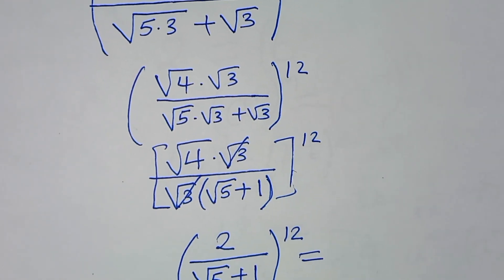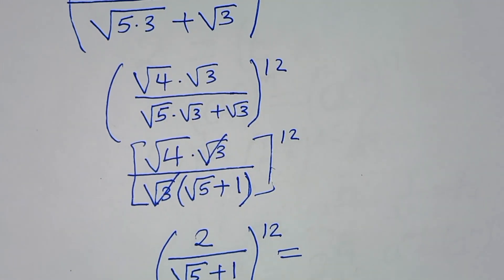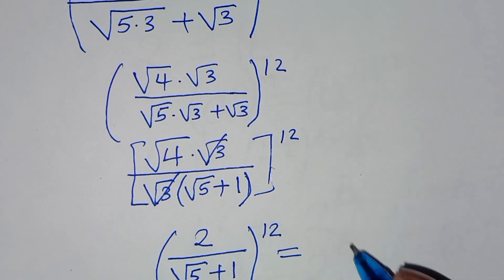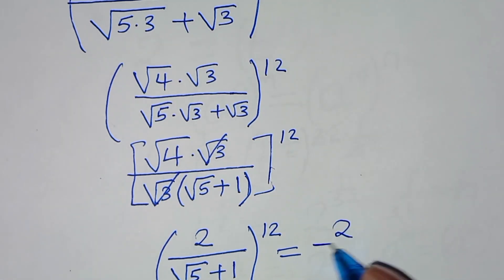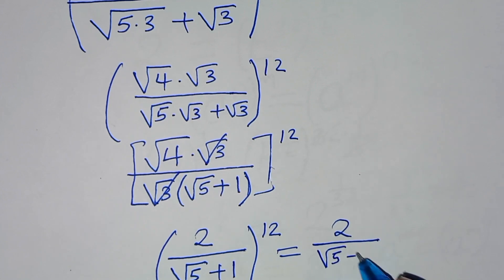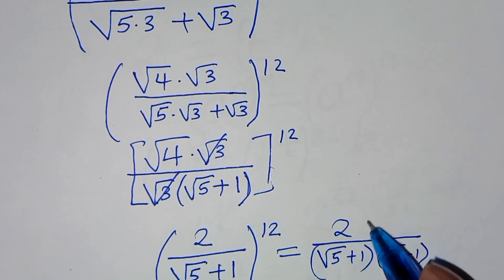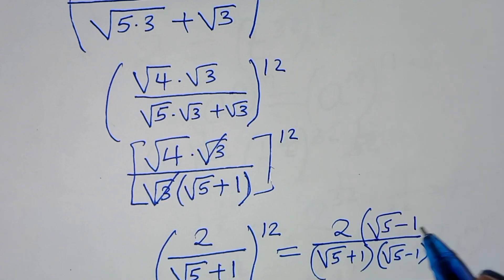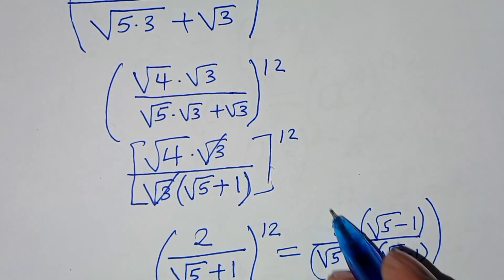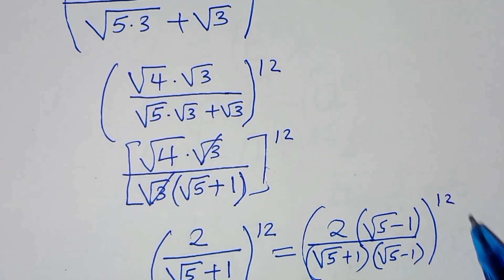The next step is to rationalize the denominator by introducing a conjugate. We have square root of 5 plus 1 in the denominator, so we introduce the conjugate square root of 5 subtract 1 to both the denominator and the numerator. Everything here is raised to power 12.